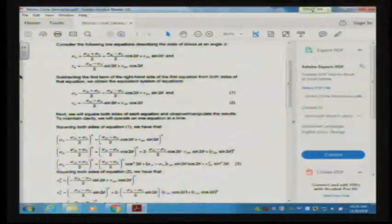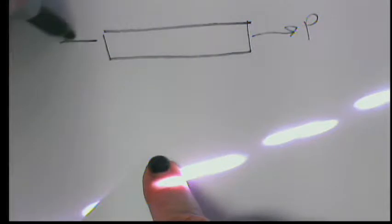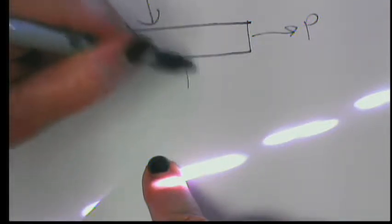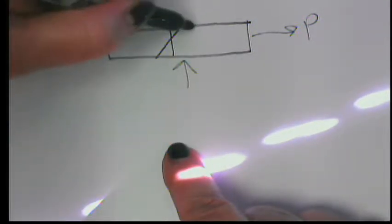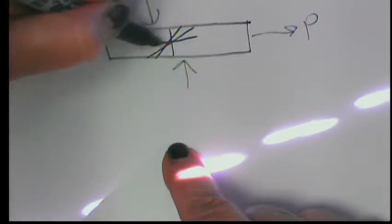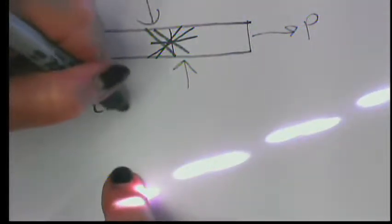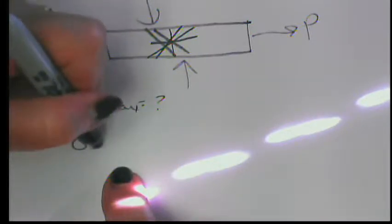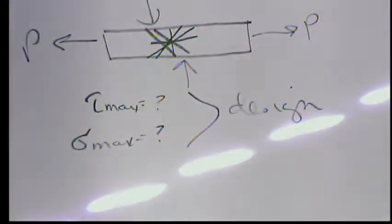The question we really have is: if we have a surface with applied loads, the sigma and tau on every surface might be different. Where is tau a maximum? Where is sigma a maximum? The reason we want to answer those questions is those are the stresses that we want to design for.